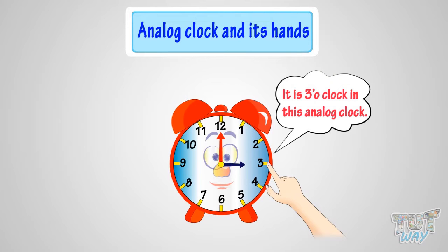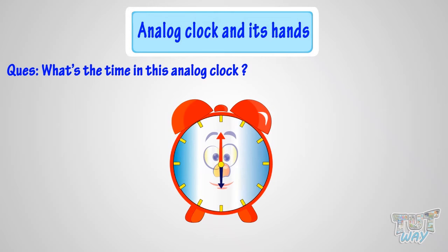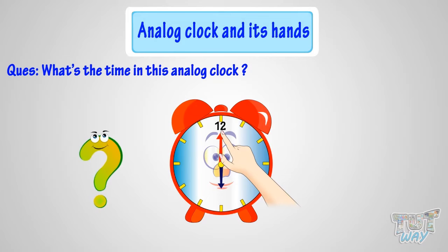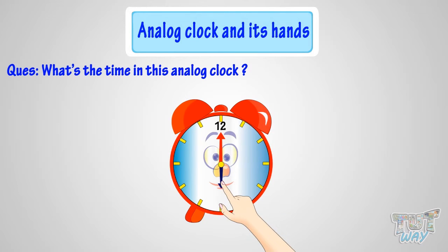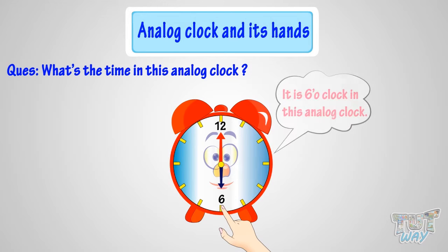Here we have another example. Can you tell me what's the time in this analog clock, where no numbers are written? This is the place of number 12, so the minute hand is pointing at number 12 — it's time to the hour. But to which hour? The hour hand tells the hour. This place is of number 6, where the hour hand is pointing. So, it's 6 o'clock. Kids, you need to remember the places of various numbers on the clock.